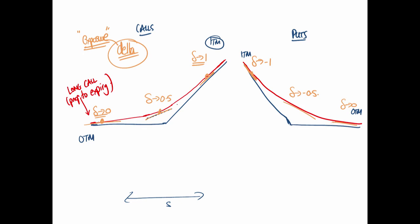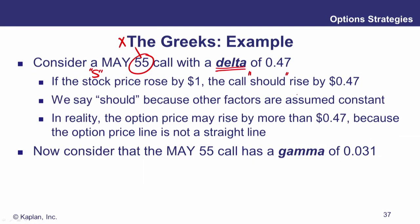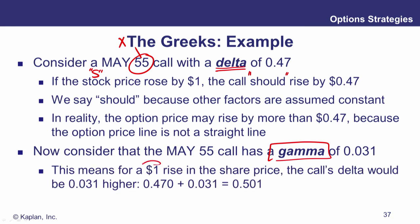The rate of change of delta is not constant either — sometimes delta changes a lot when the underlying moves and sometimes it doesn't change very much. So we need to introduce the rate of change of delta as the underlying asset moves, which is referred to as gamma.